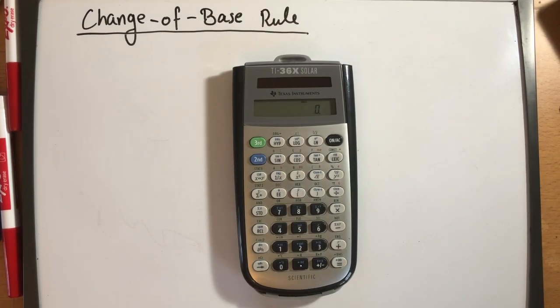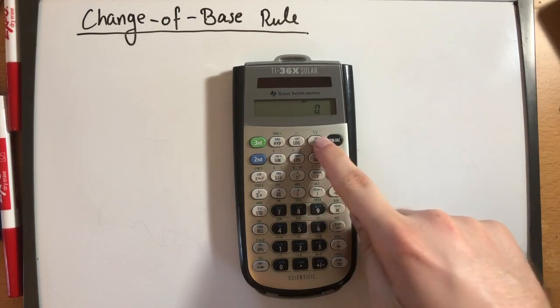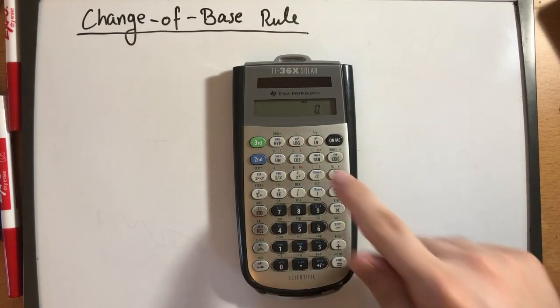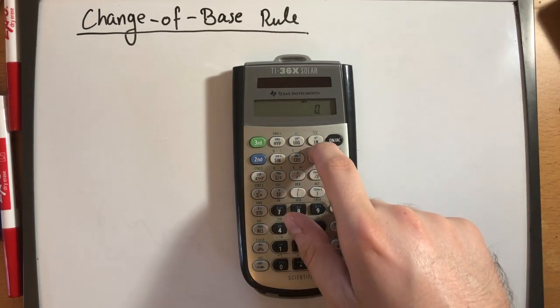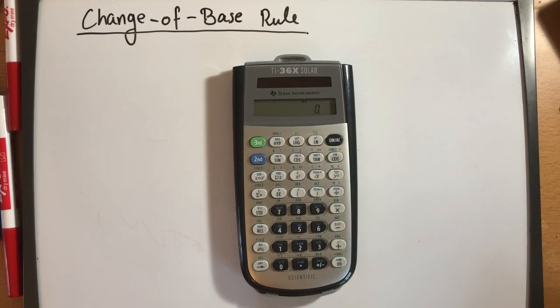So why is the change of base rule so valuable? Well, because with all scientific calculators, you will notice the two log buttons, log and ln. These represent the common log and the natural log, respectively.